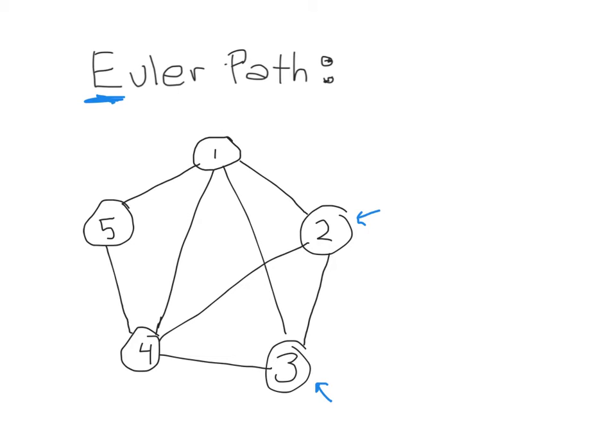So here we should be able to find one. Let's see if we can cover all of the edges. Let's go from two to three, then four, then two, then one, then five, then four, back up to one, and finally down to three. So we've done a path where we started at one of the nodes with odd degree and ended at the other node with odd degree.